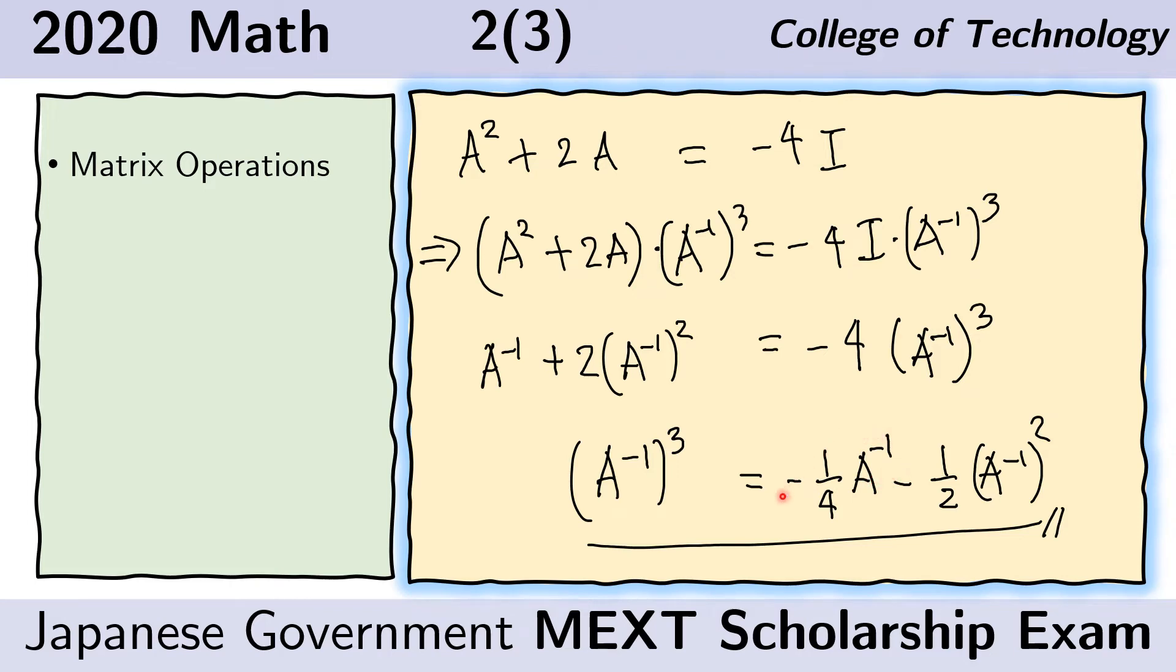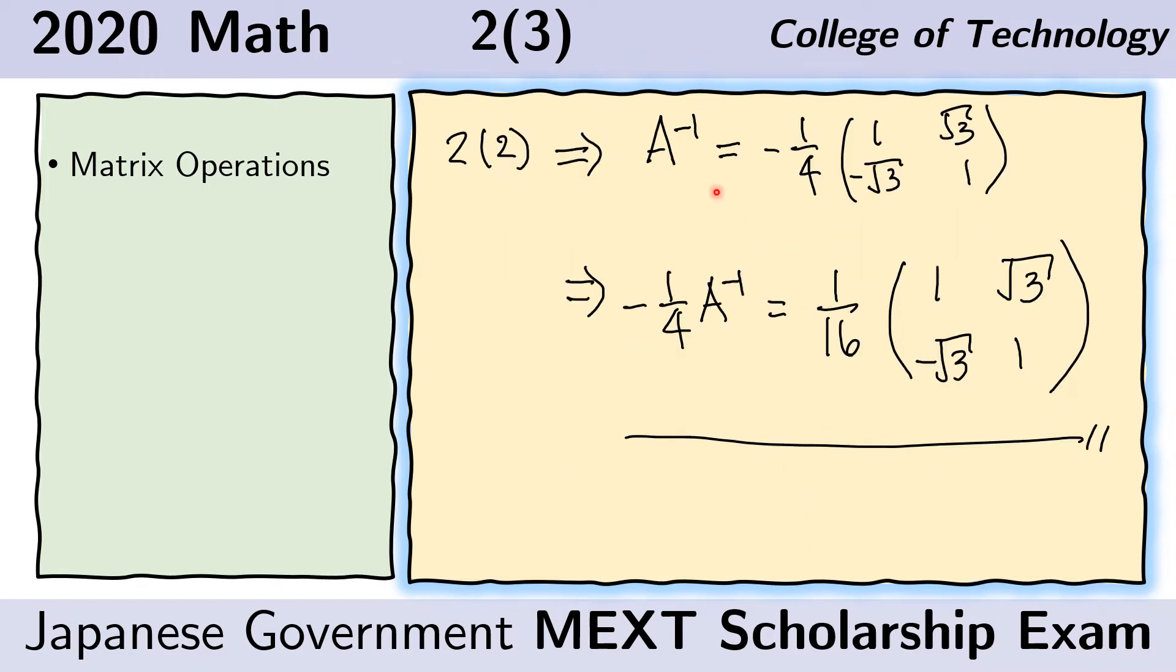The way we do that is first we obtain this, and then we also obtain this and combine them into a single matrix. First, we get this in the next slide. That is straightforward because we already know from problem 2-2 that the matrix inverse is given by this. And so if you just multiply negative 1 over 4th, we get the first term of the expression in the previous slide.